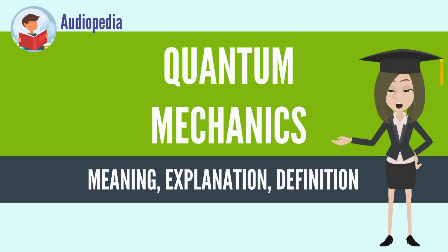Most theories in classical physics can be derived from quantum mechanics as an approximation valid at large macroscopic scale. Quantum mechanics differs from classical physics in that energy, momentum, angular momentum and other quantities of a system are restricted to discrete values. Objects have characteristics of both particles and waves — quantization and wave-particle duality.